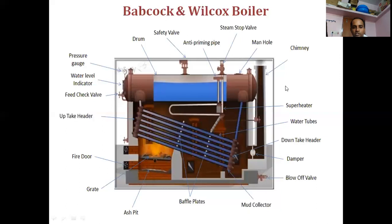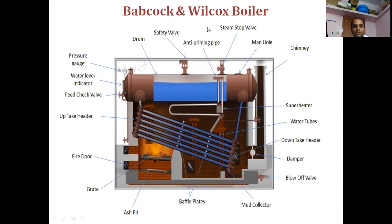The boiler shell is mounted horizontally. You can see the tubes through which water is being passed, known as the water tubes. The furnace is located outside of the boiler shell, which means it is an externally fired boiler. This is stationary in nature and is generally used in steam power plants to develop steam for a pressure range of 10 bar to 20 bar, and in some cases above 20 bar.